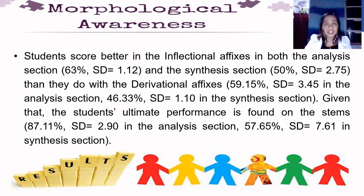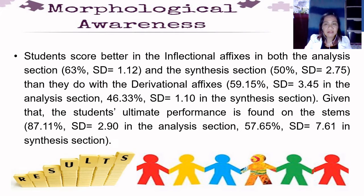The students scored better in the inflectional morphemes — 63% (SD = 1.12) in the analysis section and 50% (SD = 2.75) in the synthesis section — than in derivational morphemes, which were 59.15% (SD = 3.45) in the analysis section and 46.33% (SD = 1.10) in the synthesis section. The students' best performance was found on the stems: 87.11% (SD = 2.90) in the analysis section and 57.65% (SD = 7.61) in the synthesis section.